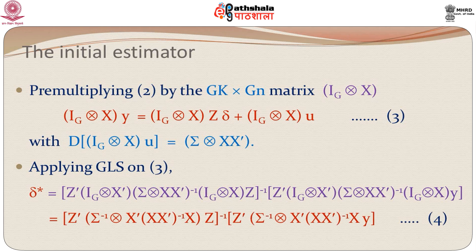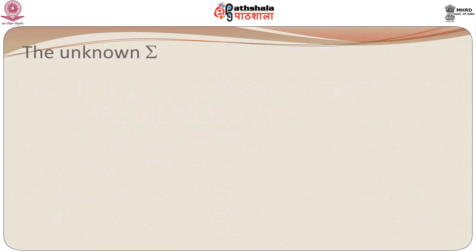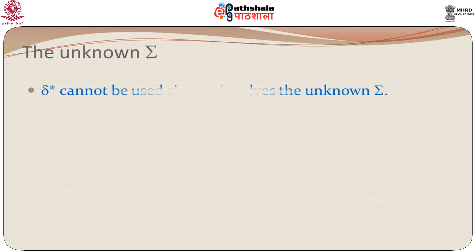We cannot use estimator 4 directly because sigma is generally unknown. Until and unless you know sigma, you cannot use delta-star. So we have to estimate sigma.